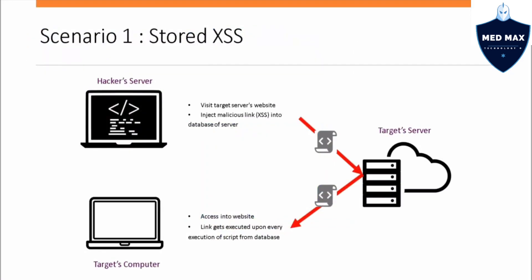The first scenario is stored cross-site scripting, which is the simplest to understand. On the left side you have the hacker's computer, which injects a malicious code into the target server. When the user goes into the server, it executes the script immediately, allowing you to perform all sorts of commands — redirection, getting cookie information, sensitive data, and so on.